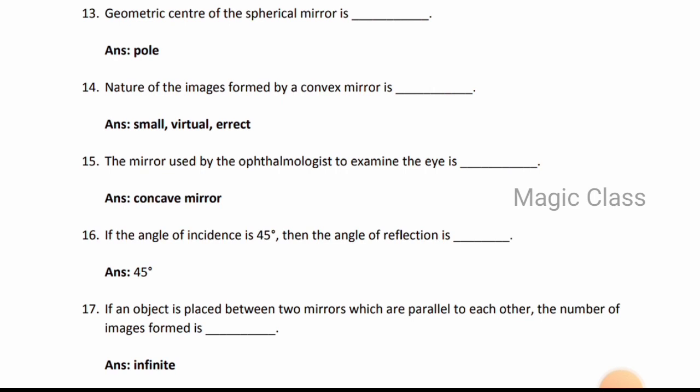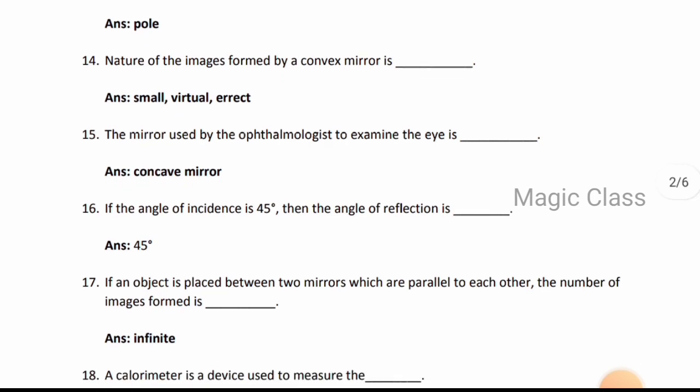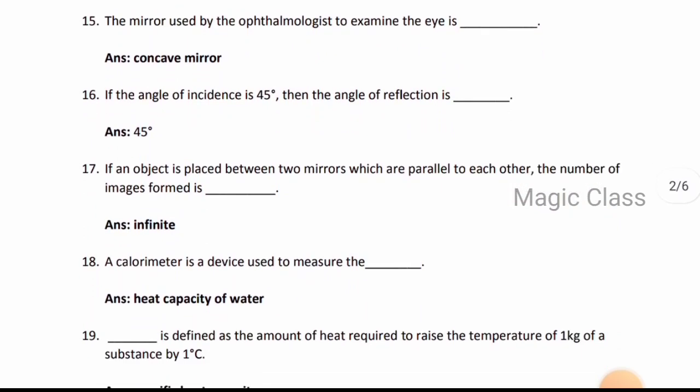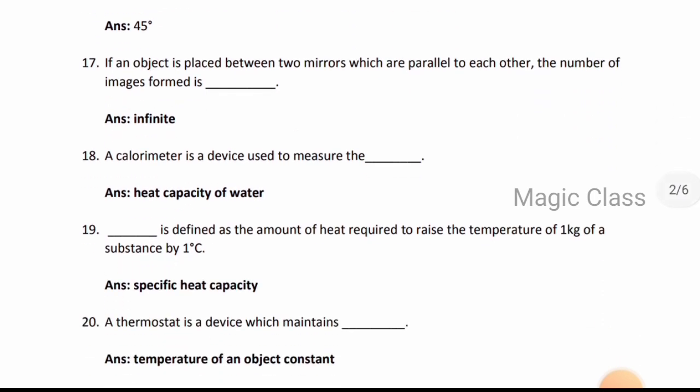Question 17: If an object is placed between two mirrors which are parallel to each other, the number of images formed is infinite. Question 18: A calorimeter is a device used to measure the heat capacity of water.